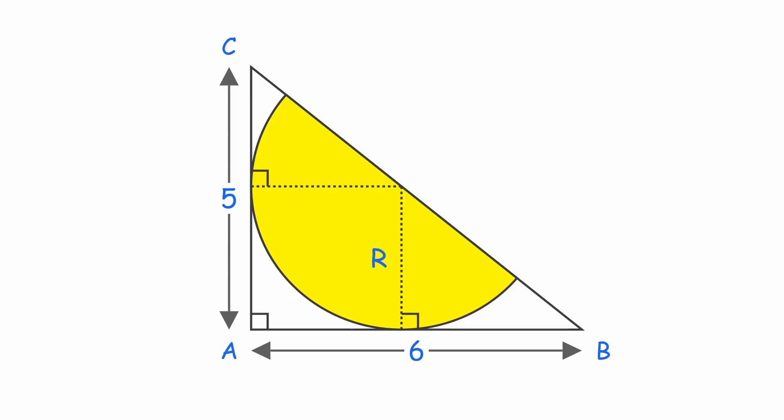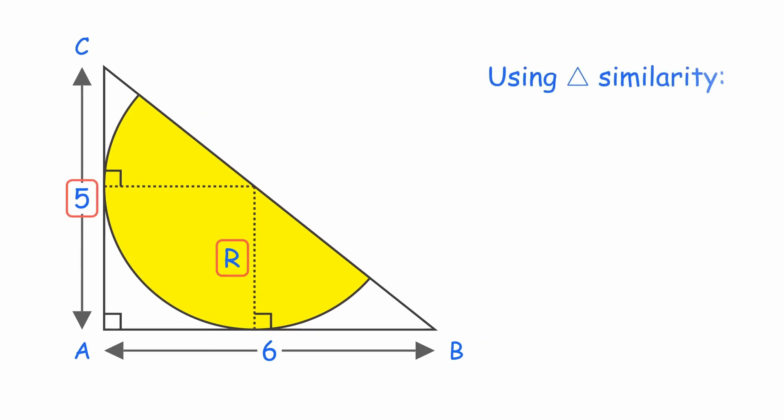Notice something clever here. This smaller triangle we've formed is similar to the original right triangle. They share angle B, and both contain a right angle. That means the ratio of their perpendiculars equals the ratio of their bases.